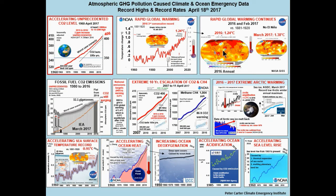These are the temperature increase maps from NASA GISS. This is the last year map we have, 2016, and here is the last month map, which is March 2017. This is carbon dioxide emissions — the latest estimate just released last month, March 2017, from the International Energy Agency. This is fossil fuel carbon dioxide emissions running from 1980 to 2015. This block in the middle shows where we're headed with respect to present national emissions targets and what that means for global temperature increases.